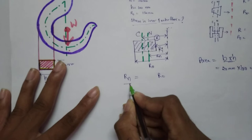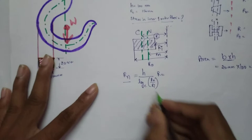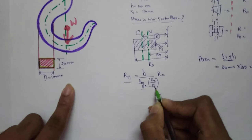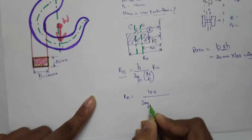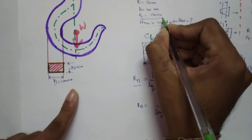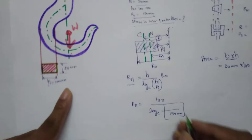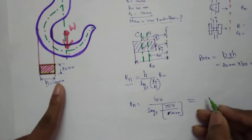Now we need to find R_N. From the data book we get the formula: R_N = H / log_e(R_o / R_i). Substituting the values: H is 100, R_o is 150 mm, R_i is 50 mm. So R_N = 100 / log_e(150/50), which gives us approximately 91.07 mm.